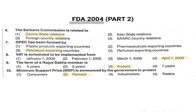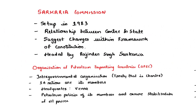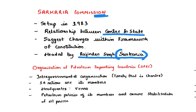The Sarkaria Commission was headed by Justice Rajinder Singh Sarkaria, hence the name. It was established to improve the relationship between the center and the states. The center set up the Sarkaria Commission to suggest changes within the framework of the Constitution, and it was set up in 1983.